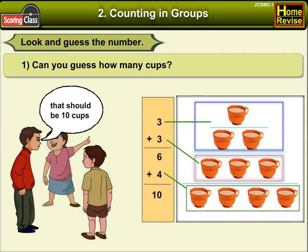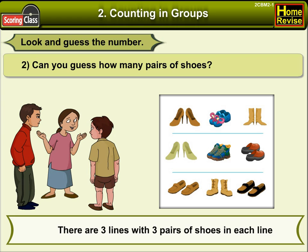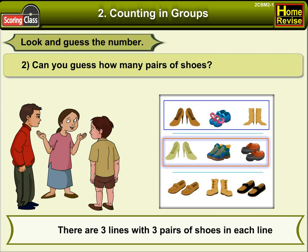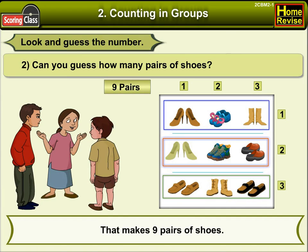Number 2. Can you guess how many pairs of shoes are there? There are 3 lines of 3 pairs of shoes in each line. That makes it 9 pairs of shoes.